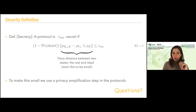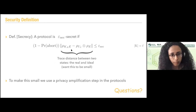Questions so far on the notation? There is one question: the probability to abort is taken over the distribution of what? Well, everything that goes inside the protocol — for example, choosing the basis or something like this.